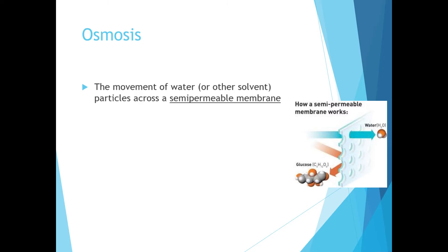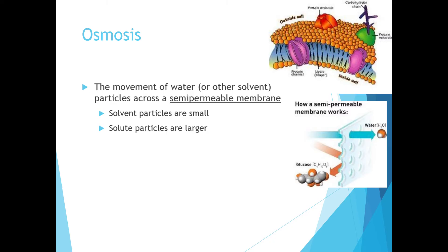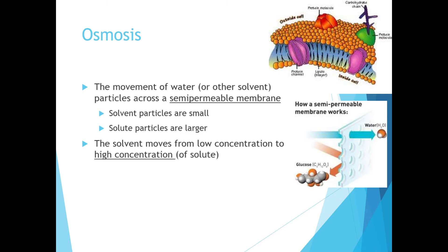Another property of solutions is called osmosis, which looks at the movement of water or another solvent across a semipermeable membrane. The simplest semipermeable membrane is a filter, where small particles like water can pass through small holes, while large solute particles like glucose bounce off and cannot pass through. Cell membranes are a real-life example of a semipermeable membrane. A solvent will always move from an area of low concentration of solute to a higher concentration of solute. This movement of water across the semipermeable membrane is referred to as osmosis.